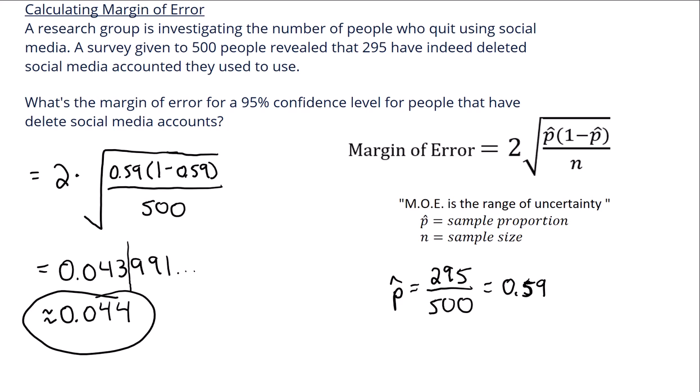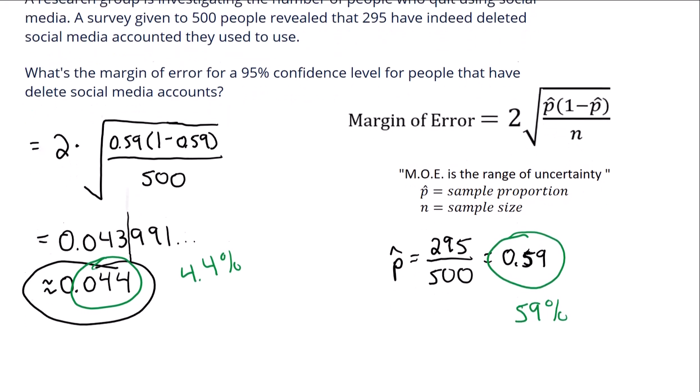Now, if you want to take that the next step further and figure out what that range would be, we could say the sample proportion was 59%, and our margin of error right here, when we had 0.044, that's going to be connected to 4.4%. We could say we'll take our 59% and subtract 4.4%, that would give us our lower amount.